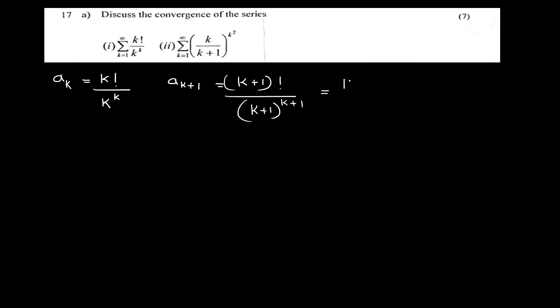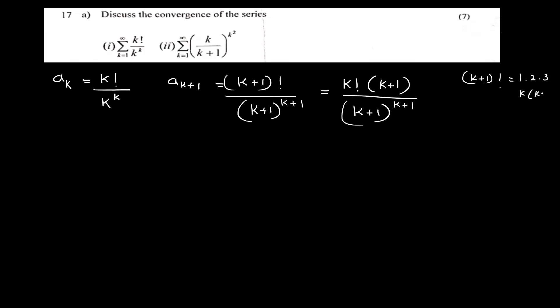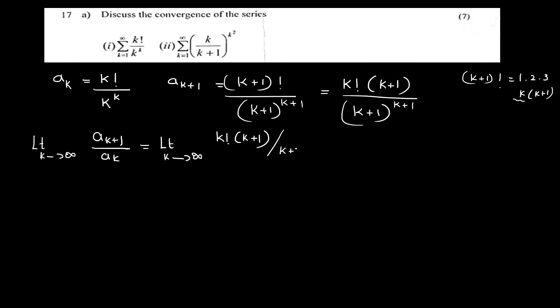Note that k plus 1 factorial equals k factorial into k plus 1. Applying the ratio test: limit k tends to infinity of a_{k+1} by a_k equals limit k tends to infinity of k factorial into k plus 1, divided by k plus 1 all raised to k plus 1, divided by k factorial by k raised to k. The k factorial terms get cancelled.